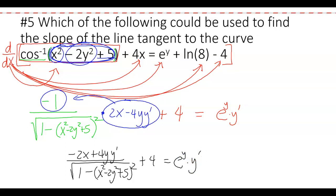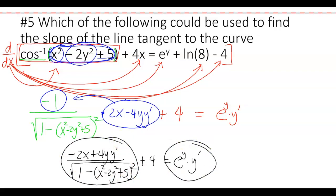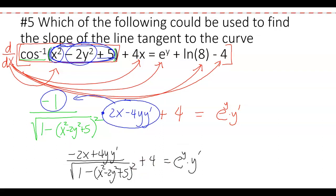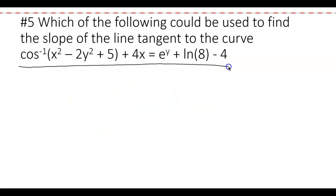These implicit differentiation problems could continue by collecting y' terms on one side, but the College Board assignment stops here — they just want to see that you can perform the implicit differentiation. Also note: the College Board uses dy/dx instead of y', but they mean the same thing. The key steps are: apply the chain rule, tag y terms with y', and let constants vanish.